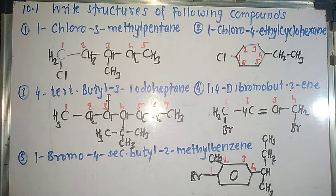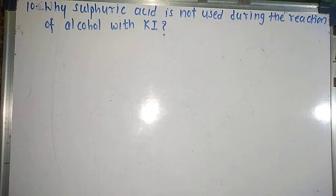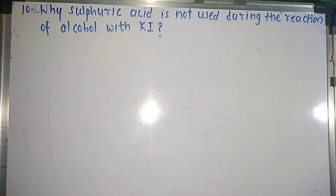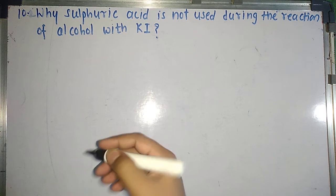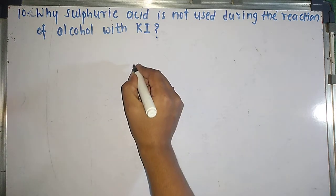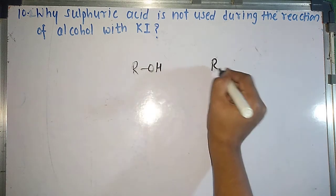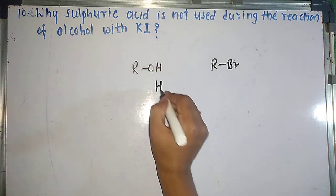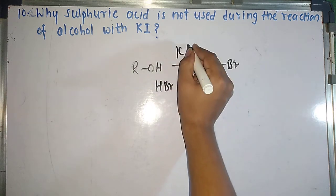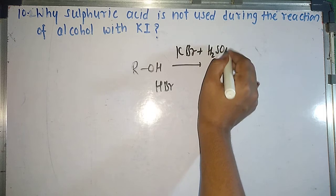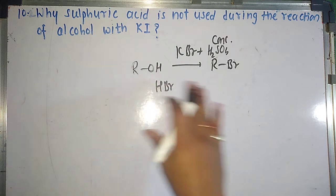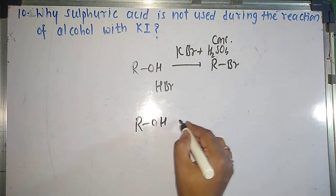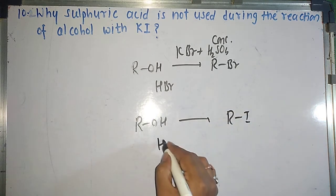That is all about writing structures when IUPAC names are given. The next question is 10.2: why is sulfuric acid not used during the reaction of alcohol with KI? If we are making alkyl iodide from alcohol — ROH to RI — then we will use HI. This HI can come from KI plus concentrated H₂SO₄, which is what the question asks about.